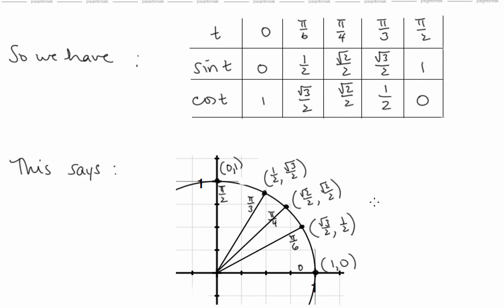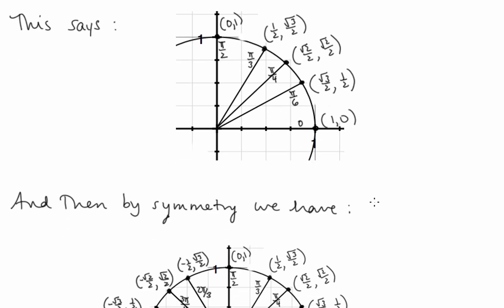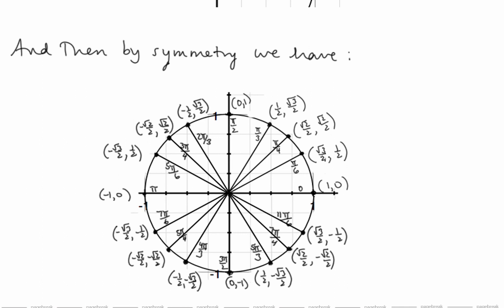Now that we have these trig evaluations — these x and y coordinates — by symmetry we can take them all around the unit circle. For example, looking at π/6 versus 11π/6: by symmetry the x value is exactly the same and the y value is just negated. So cosine of 11π/6 is radical 3 over 2, and sine of 11π/6 is negative 1/2. Similarly for 3π/4, using symmetry with π/4 values: the x value is negated and the y value stays the same. So cosine of 3π/4 is negative radical 2 over 2, and sine of 3π/4 is positive radical 2 over 2.